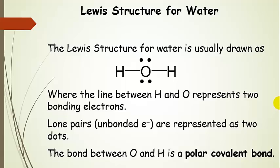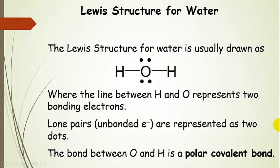We usually draw the Lewis structure for water like this. This line represents two shared electrons. Where we had dots in the previous slide, now we've replaced them with a line. These electrons here are called lone pairs, and those only belong to oxygen. There's one lone pair, there's the other lone pair, here are two electrons being shared on one side, here are two electrons being shared on the other side. So oxygen still has eight electrons surrounding it, and each of the hydrogens has two. This is the Lewis structure for water. The bond between oxygen and hydrogen is a polar covalent bond — an unequal sharing — because oxygen is a lot more electronegative than hydrogen.